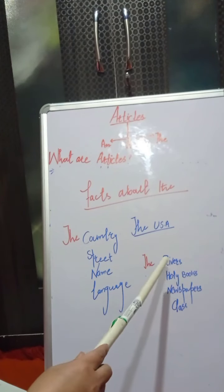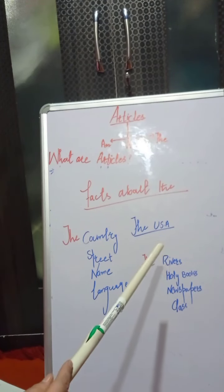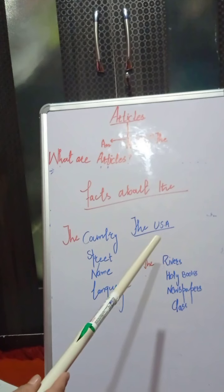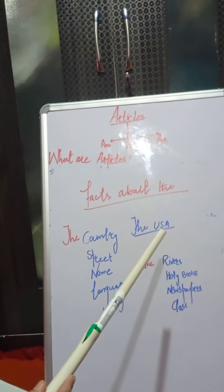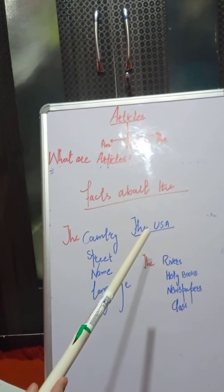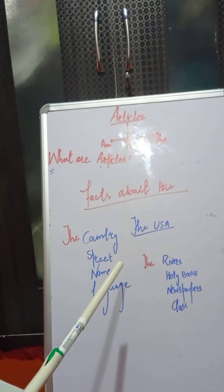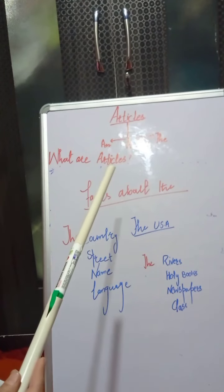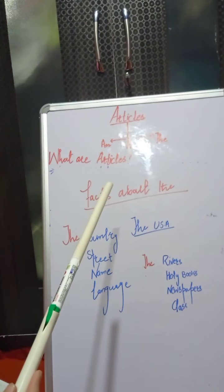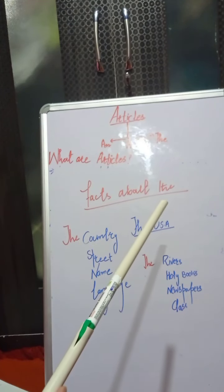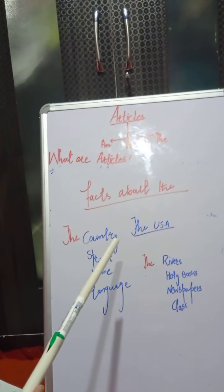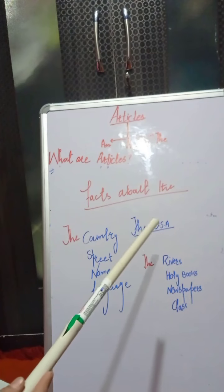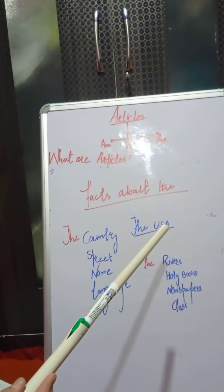In this video, we learned about articles. There are three articles: A, AN, and THE. They are used before nouns, used as adjectives in a sentence, and used for general and specific context. We categorized them into two types: definite article (the) and indefinite articles (a and an). We also learned the facts of 'a' and 'an' and the facts of 'the.' Stay safe. Allah Hafiz.